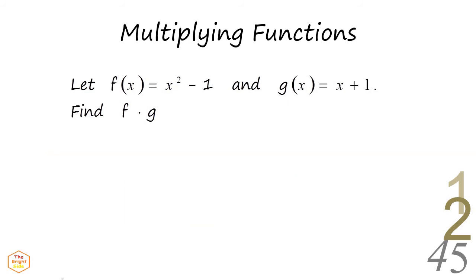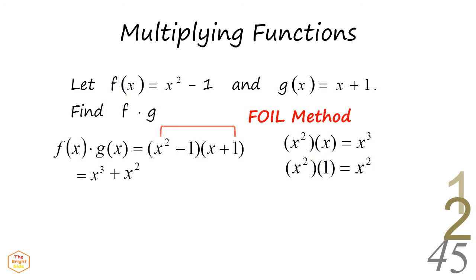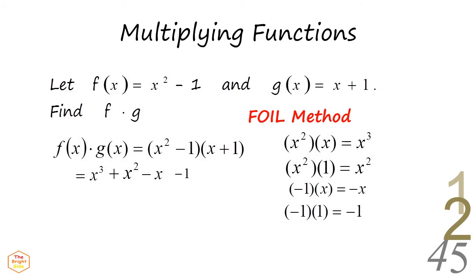Let's do another exercise on multiplication of functions. For function f of x equals x squared minus 1, and g of x equals x plus 1, find f times g. In this case, we will use the FOIL method. Multiply the first terms, next multiply the outer terms, then multiply the inner terms, and then multiply the last terms. Then simplify. In this case, there are no similar terms.